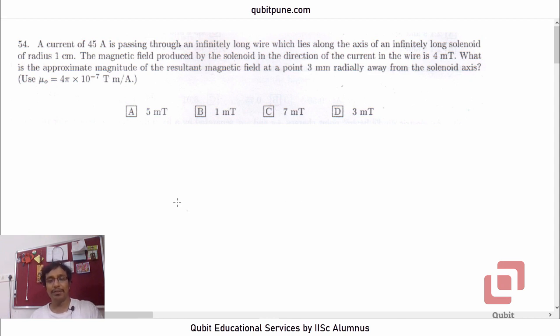In this video series, we are solving the 2018 Physics section from IISER aptitude test and in this particular video, we will be solving question number 54 which is based on magnetic fields due to electric current.